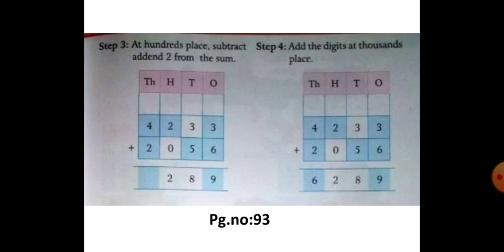Next, step number 3. At hundred's place, subtract addend 2 from the sum. So that is 2 minus 2. So 2 minus 2 is 0.